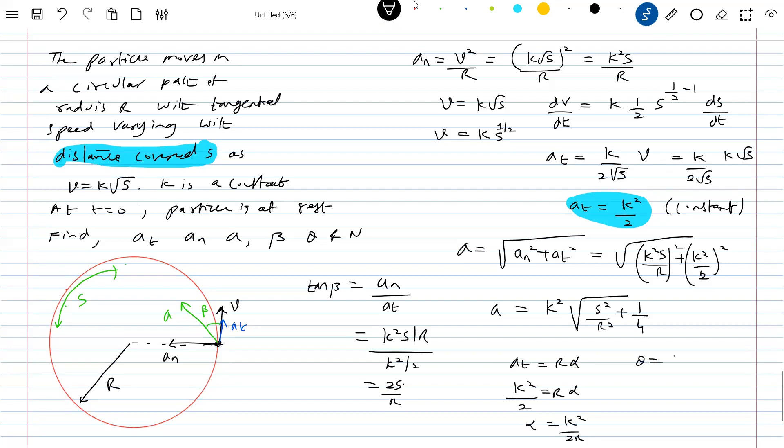So bring theta. Alpha T square by 2. K square T square by 4R. So once you know theta, then number of revolutions, theta by 2. Why alpha T square? Because initially it was at rest. At t equals zero particle is at rest.